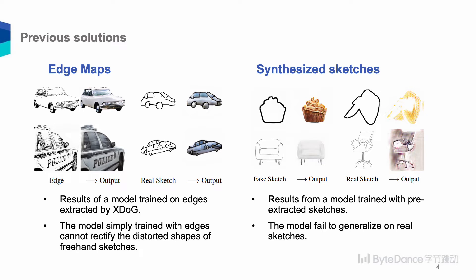To handle the missing sketch classes, some previous solutions replace them with extracted edge maps. However, a model simply trained with edges cannot rectify the distorted shapes of freehand sketches, as shown in the left figure. Other works try to substitute with synthesized sketches from an off-the-shelf sketch extractor. Still, a model trained with synthesized sketches cannot generalize to real sketches, as shown in the right figure.